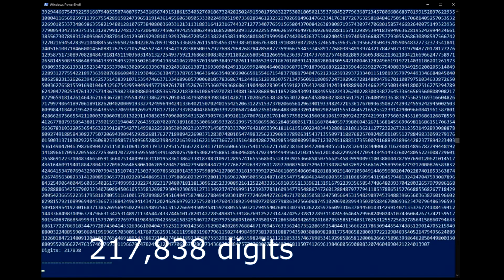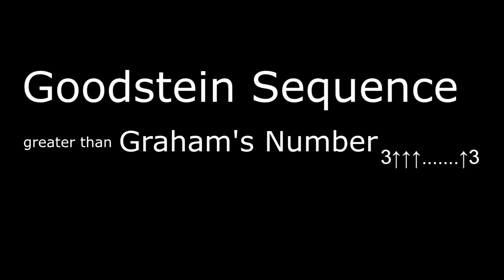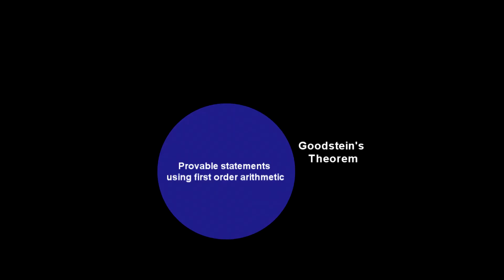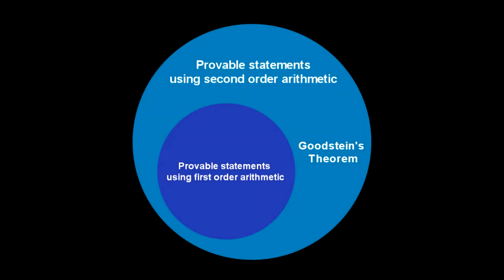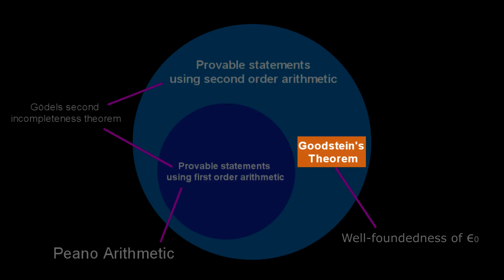These numbers are unimaginably large, but surprisingly all Goodstein sequences eventually come down to zero. Depending on the starting value, Goodstein sequences can get larger than Graham's number, and the growth rate can be faster than Ackermann's function. In fact, these sequences grow at such an incredible rate that the theorem literally cannot be proven using first-order arithmetic, and can only be proven using a stronger system — namely, second-order arithmetic. We will focus on the proof of Goodstein's theorem within the second-order system.